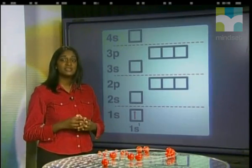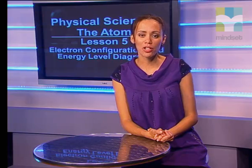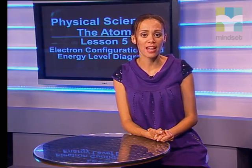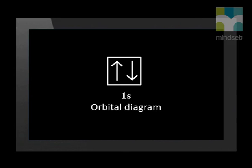I want to draw your attention to an important principle. The reason we draw electrons in the same sub-shell as one arrow pointing up and one arrow pointing down is that two electrons in the same sub-shell do not spin in the same way.